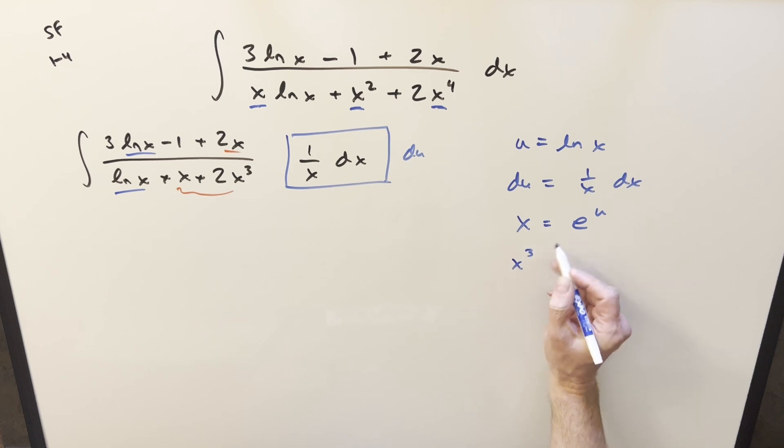Rearranging this we can say x is going to be e to the u. But keep in mind we've got x cubed here. Well, that's pretty easy. So if I cube this on both sides, we can write this as x cubed is going to be e to the 3u.